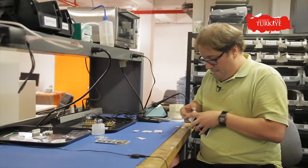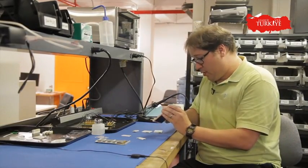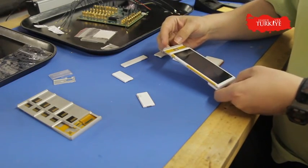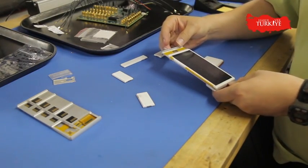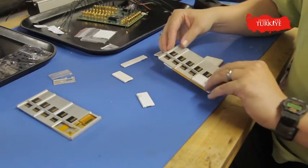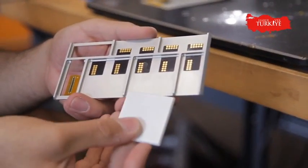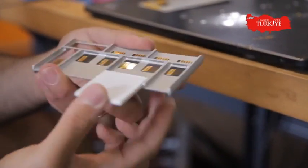And then once you have that, once we have the individual pieces working, then we put them together into the complete system. Here we have the phone, the first prototype of the ARA phone. We've made some mechanical improvements to get the connectors to fit more reliably.